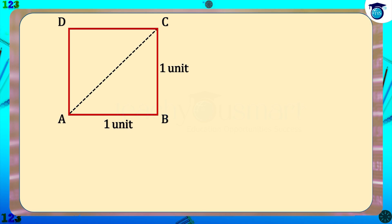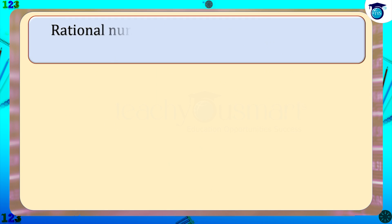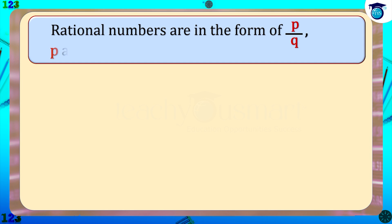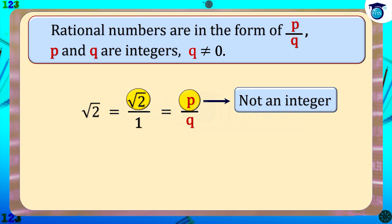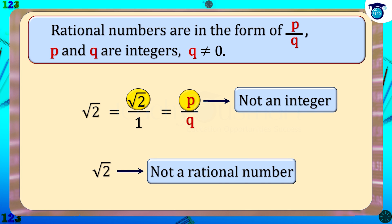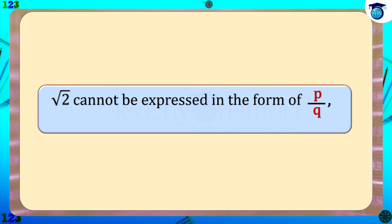What about √2 — is it a rational number? We know that rational numbers are in the form of p/q, where p and q are integers and q is not equal to zero. We can write √2 as √2/1, which is in the form p/q, but here p is not an integer. Therefore √2 is not a rational number. That is, √2 cannot be expressed in the form of p/q for any integers p and q.